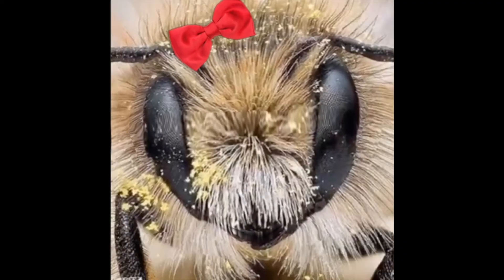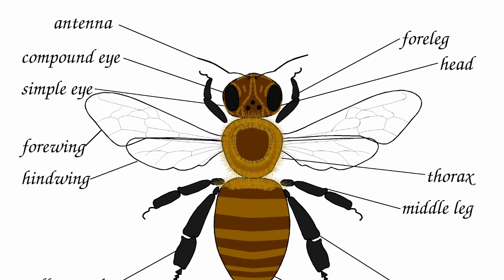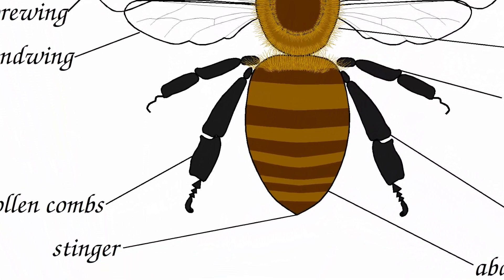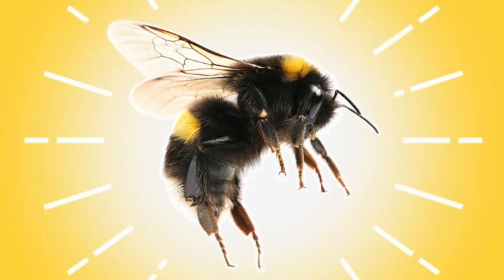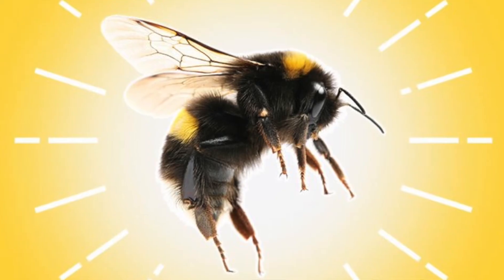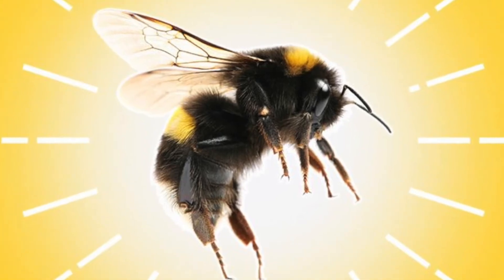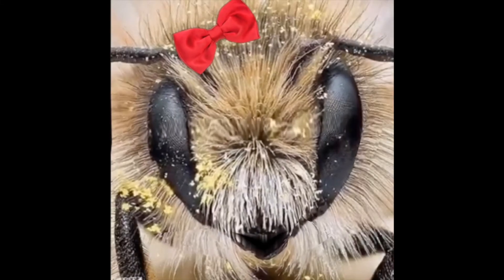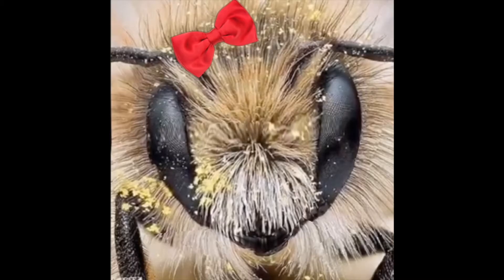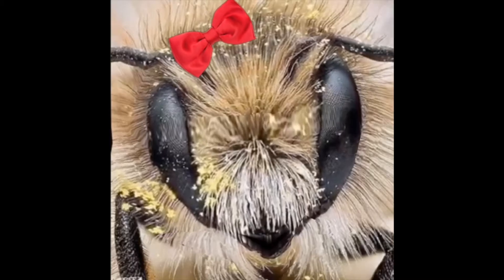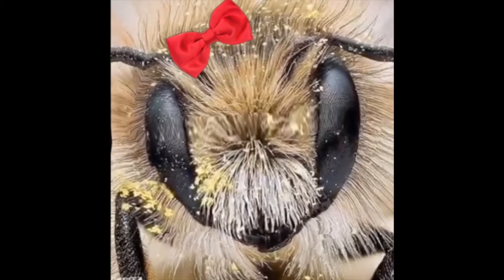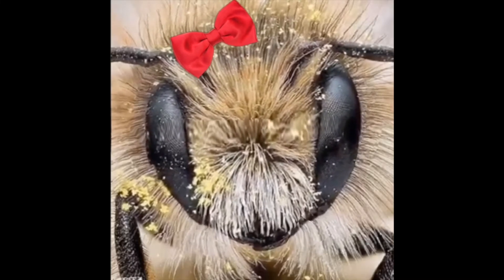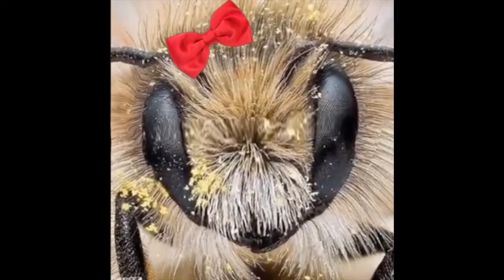The abdomen of the honeybee contains our stinger. The purpose of a stinger is for defense. However, once a honeybee stings, it also loses its life. So we don't ever want to have to sting anybody.